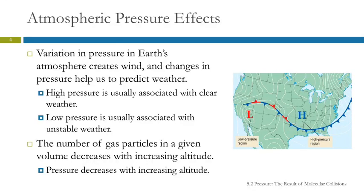The Earth's atmosphere, although it has a relatively constant pressure, does have variations in the weather. Meteorologists talk about low-pressure regions and high-pressure regions. Variations in the pressure of Earth's atmosphere is what creates wind, and changes in the pressure can help us predict the weather.